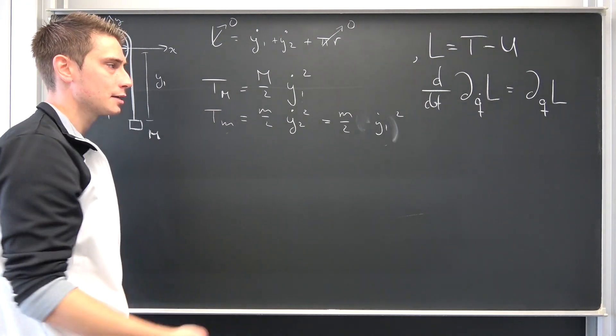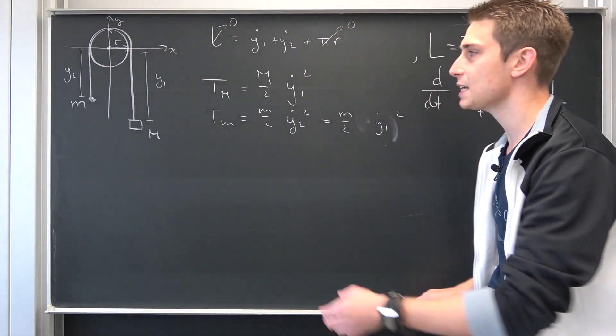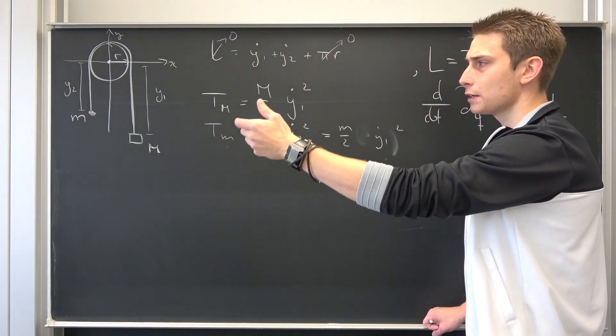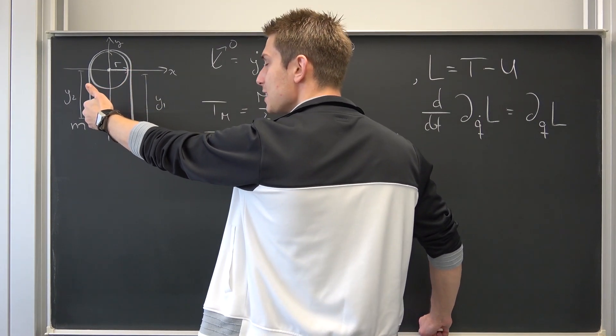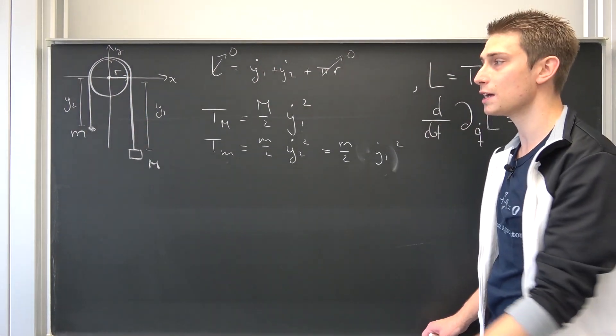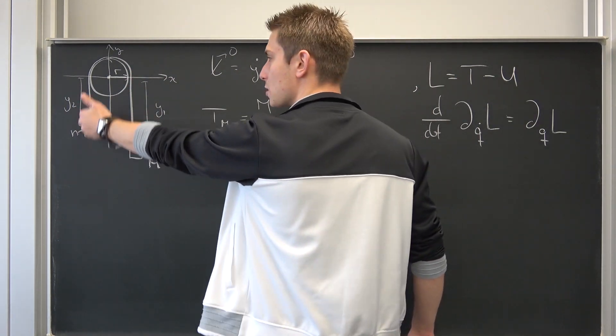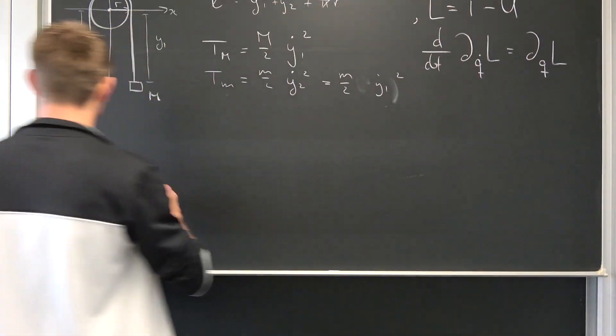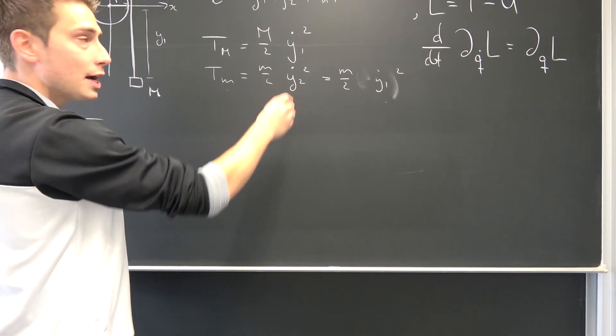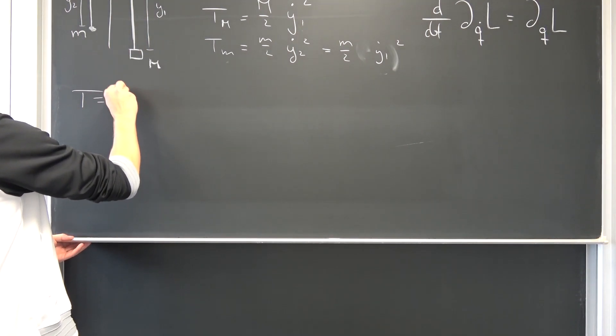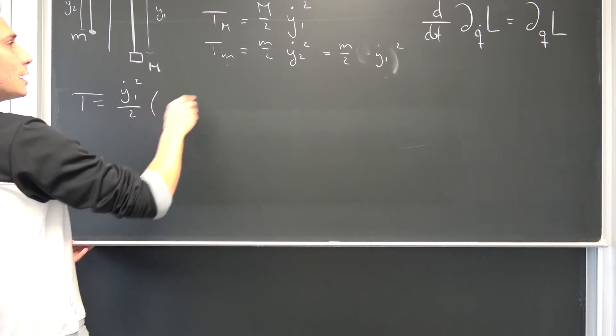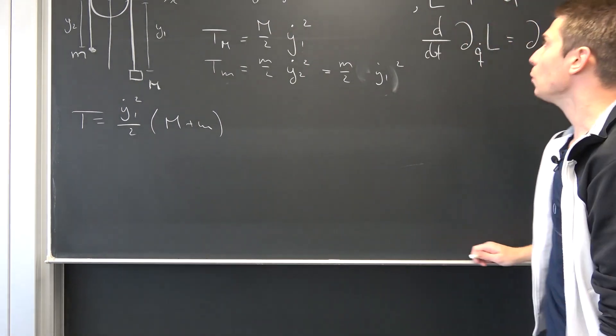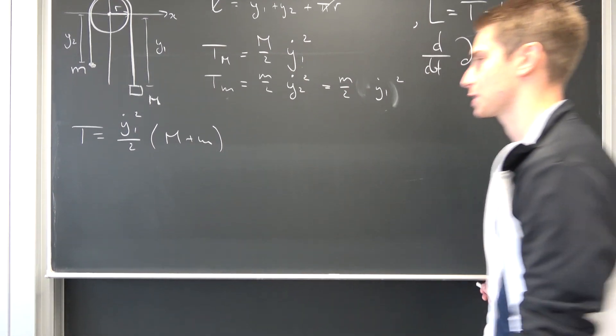Meaning overall that we can express this as m over 2 times negative Y1 dot squared. But the squared gets rid of the negative sign. This is curious, right? Our velocity squared are the same on this kinetic energy. And it does make sense. So if this pulls on the string with 3 kilometers per hour, for example, then this actually also goes up by the same velocity. It goes downwards with a certain velocity, and this goes upwards with the very same velocity. It does make sense physically.